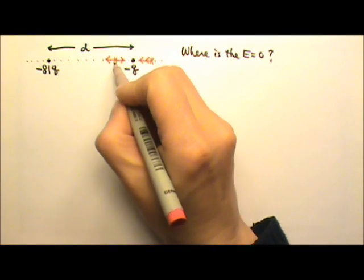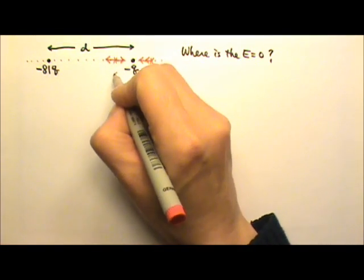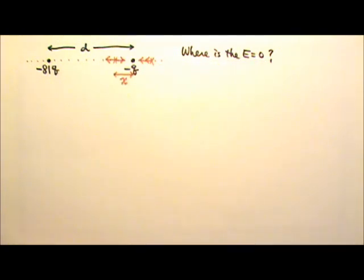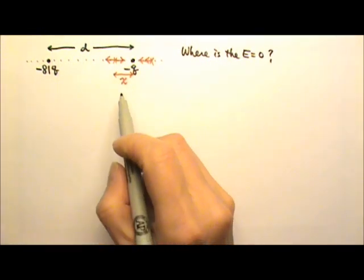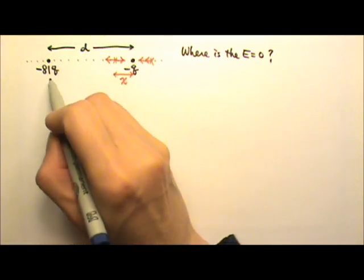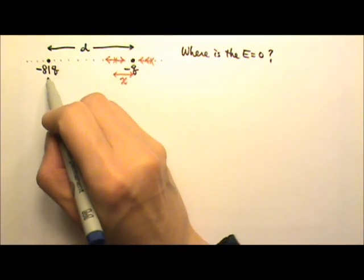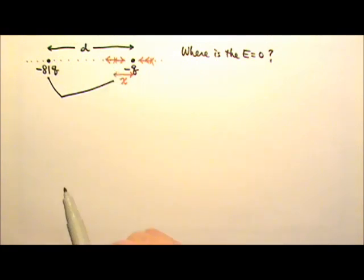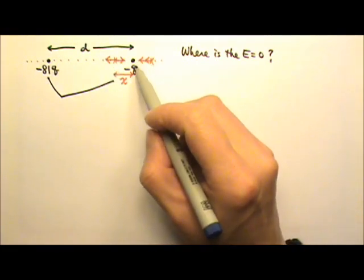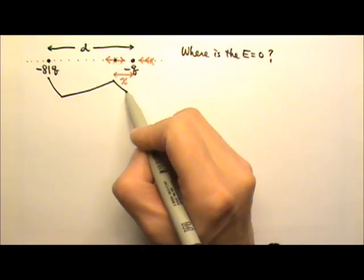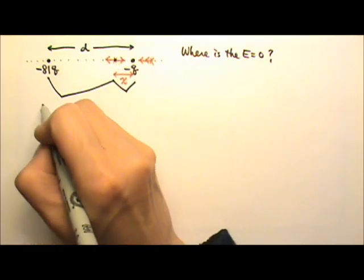So let's say the location is right here, and we have to find the exact location — we need to find the distance x. We need to write an equation: the field produced by the negative 81q at this location has to equal the field produced by the negative q at that same location.